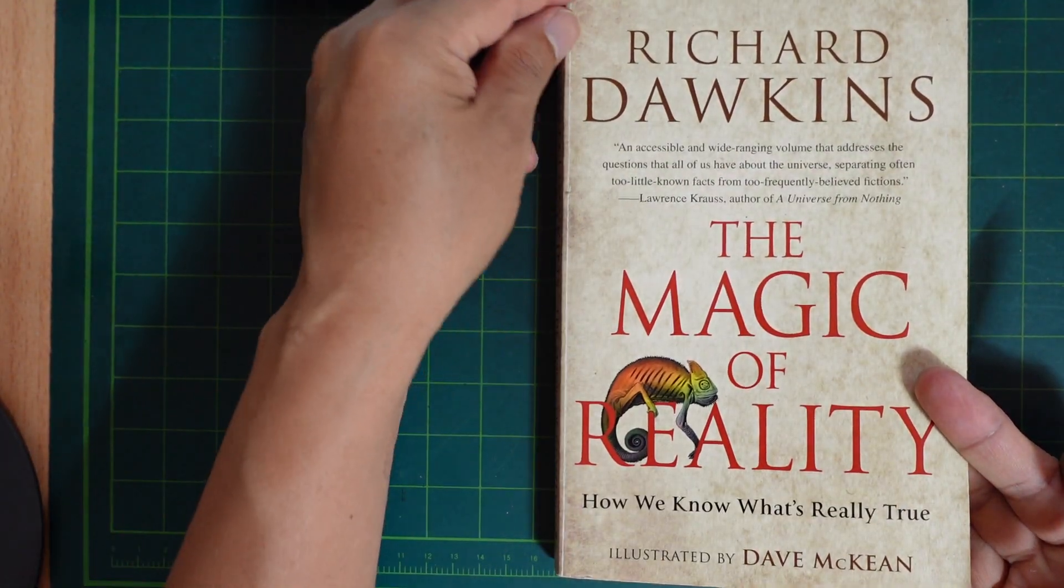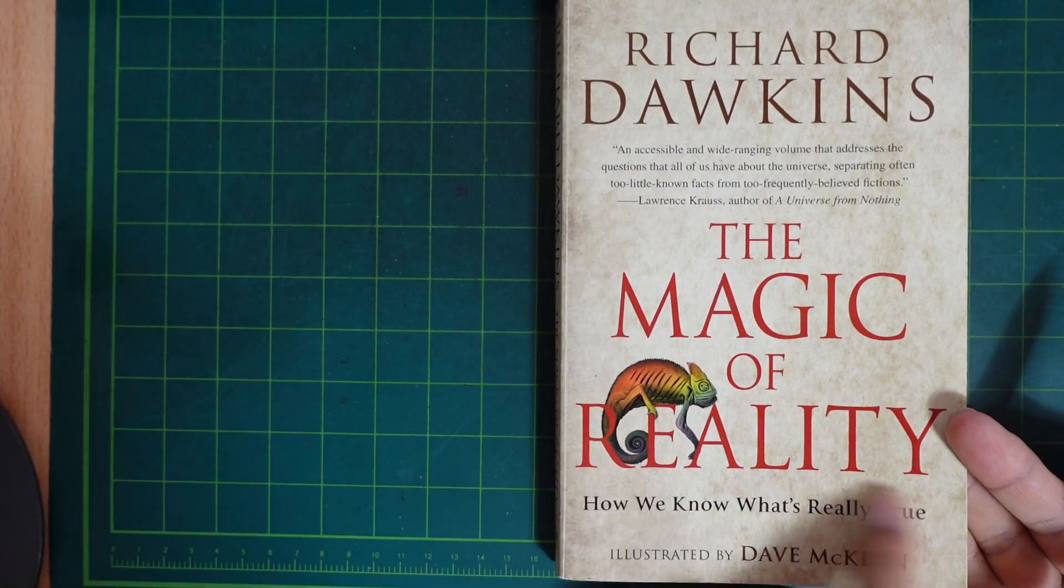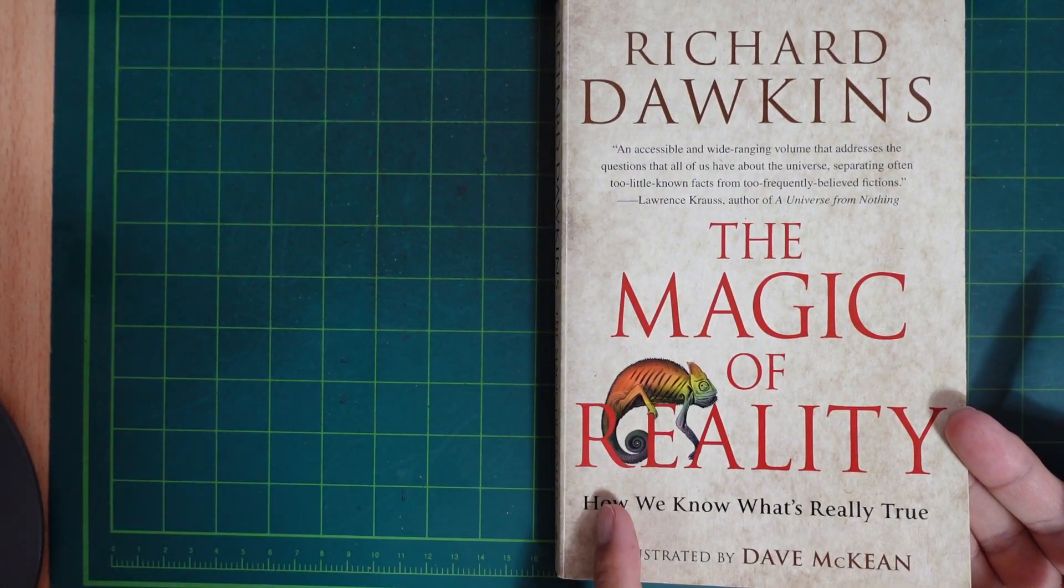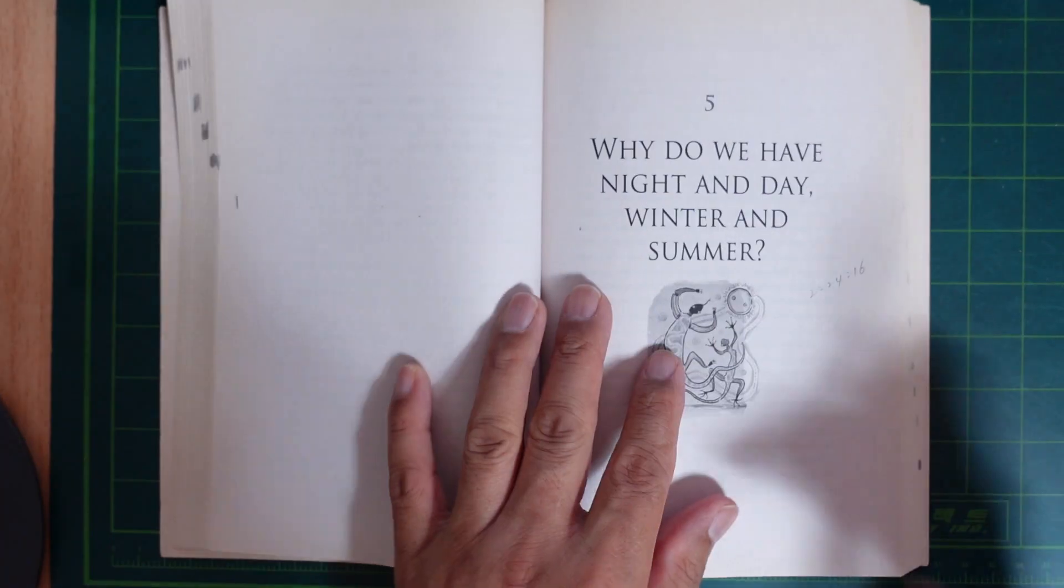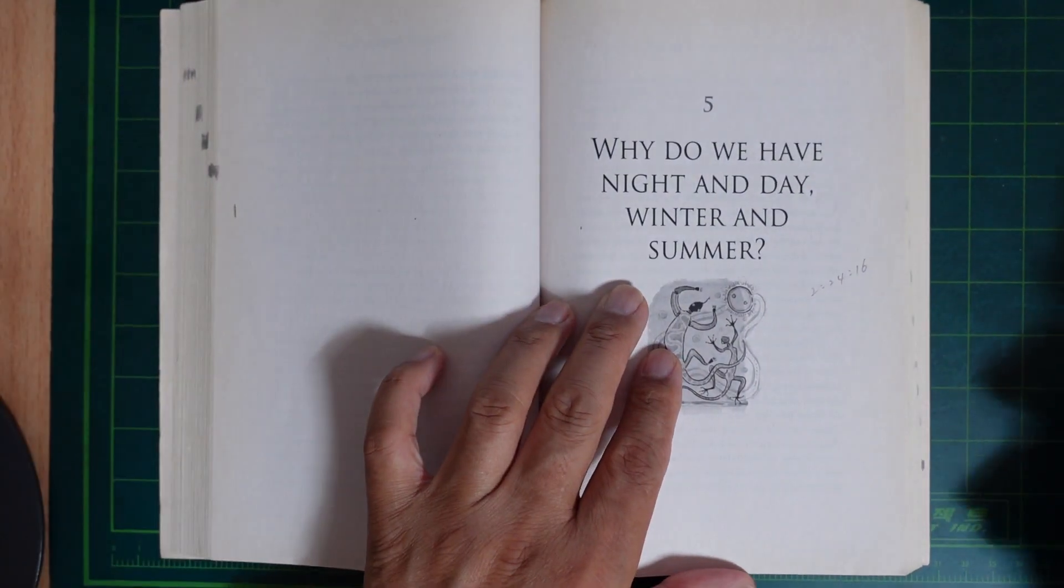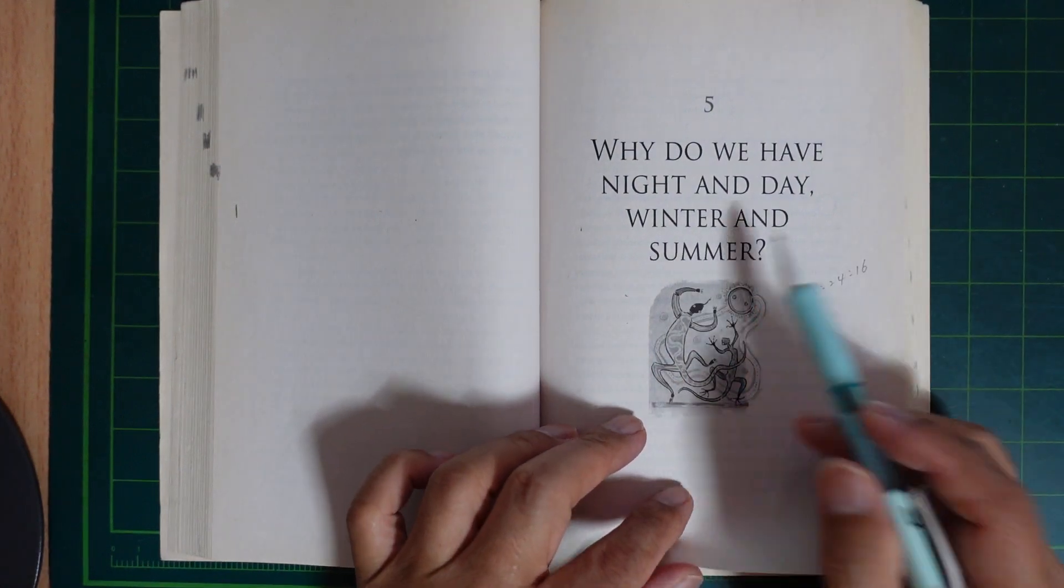Richard Dawkins. The Magic of Reality. How we know what's really true? Why do we have night and day, winter and summer?